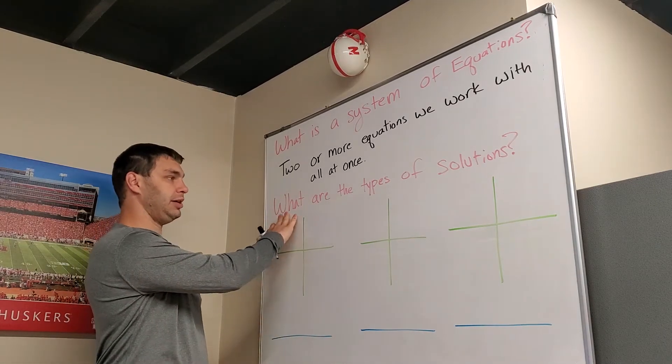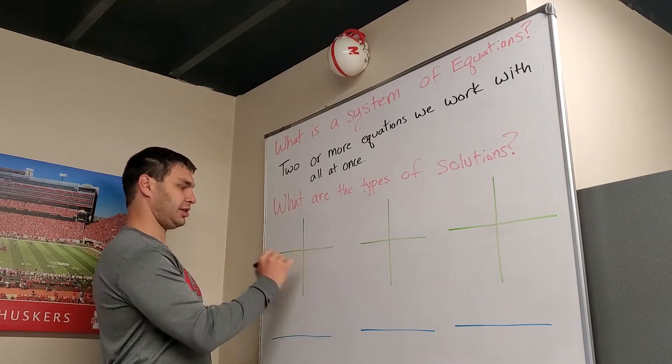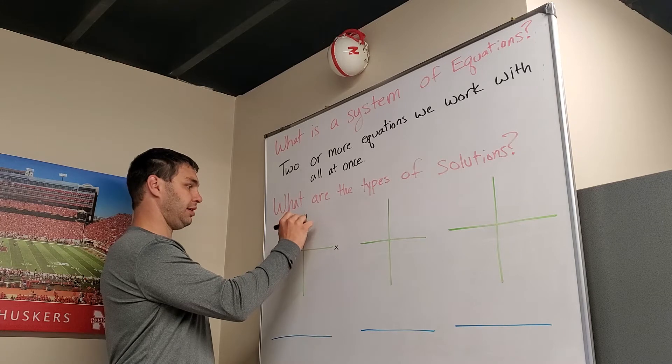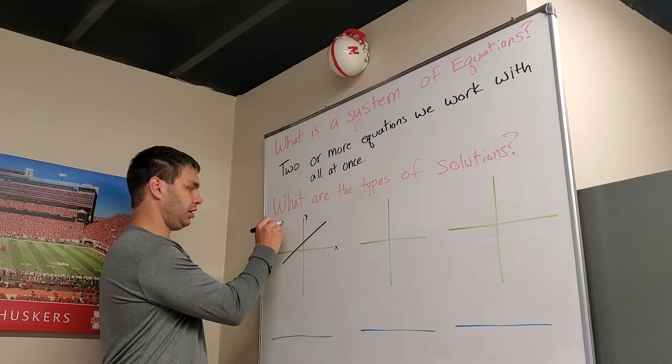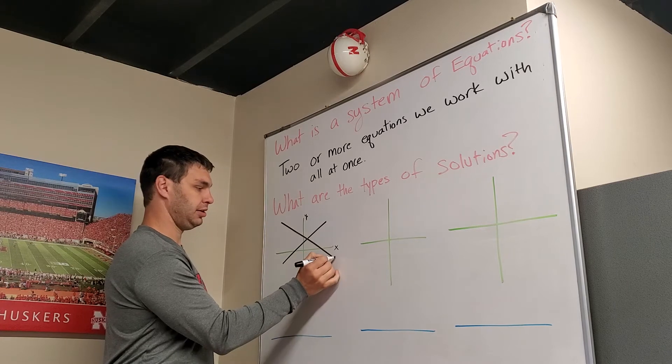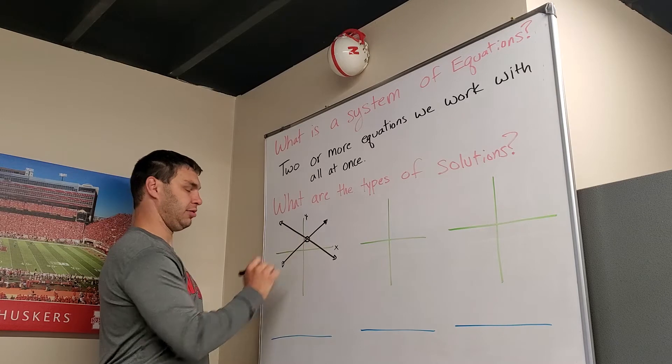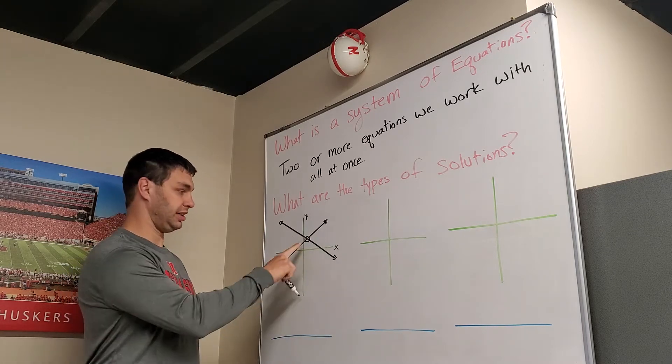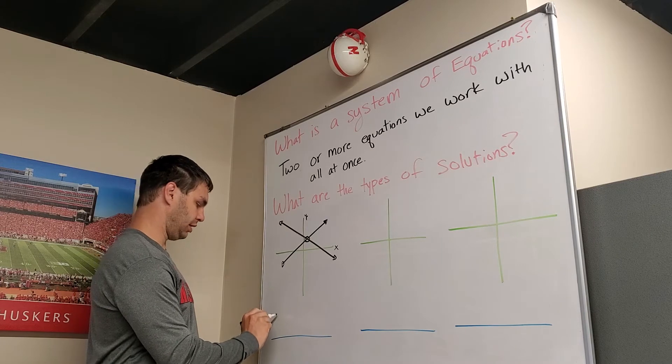That brings me to my next point, what are the types of solutions? So if this is our coordinate plane, and our two lines that we're working with, the two equations, if they cross each other, the point at which they cross is going to be our solution, and it's going to have exactly one. This only crosses in one place, so there's going to be one solution.